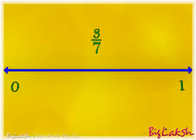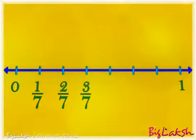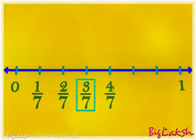Now as explained above, divide the number line between 0 and 1 into 7 equal parts and mark these points as shown. Now the third division represents 3 by 7 on the screen.